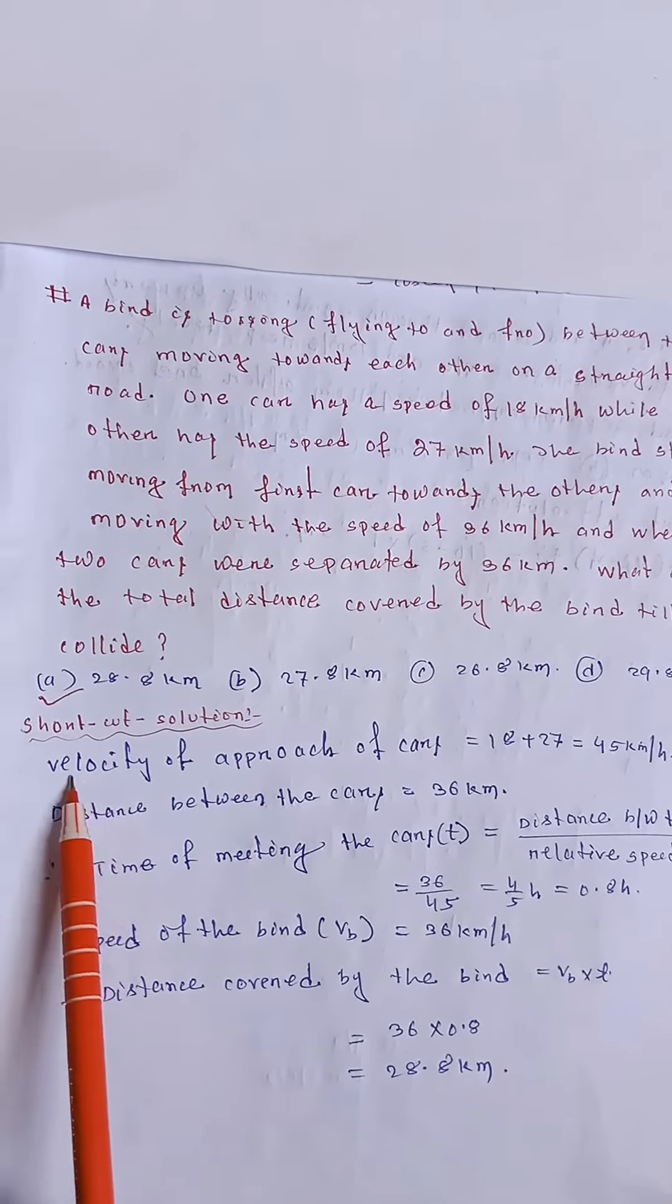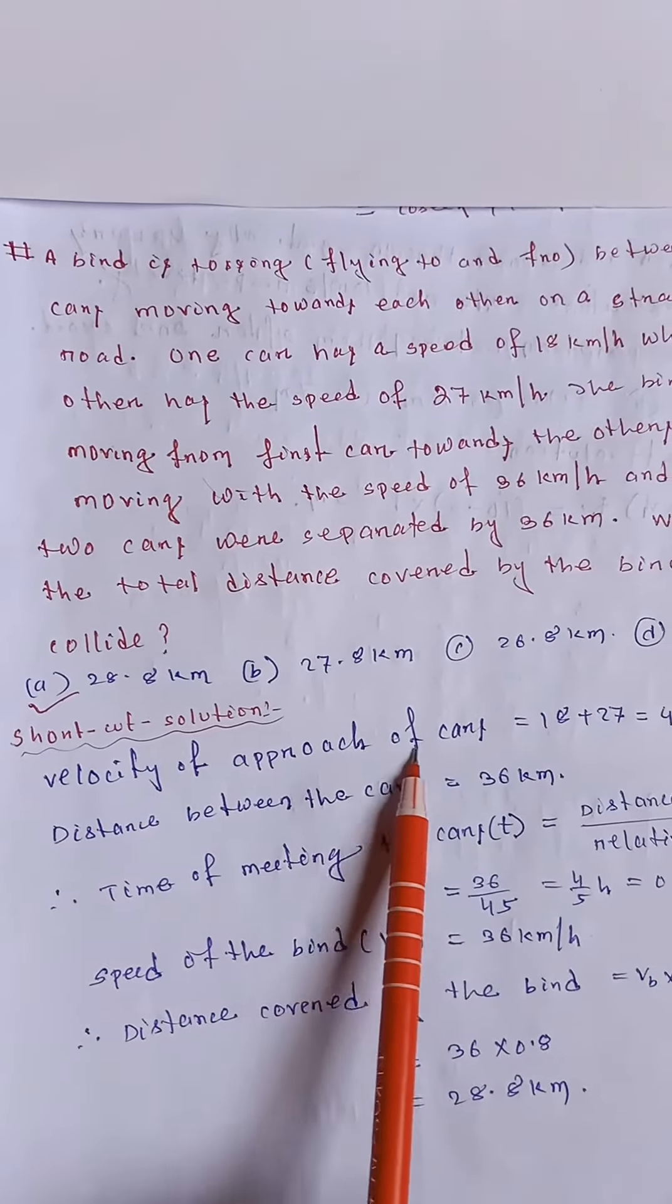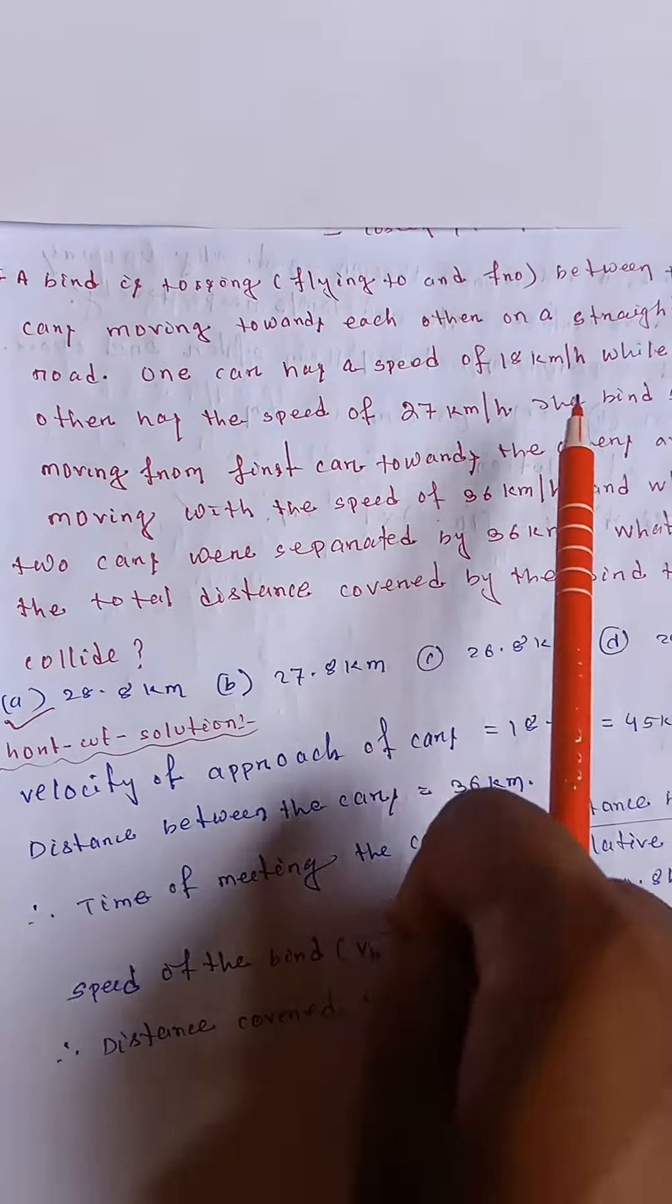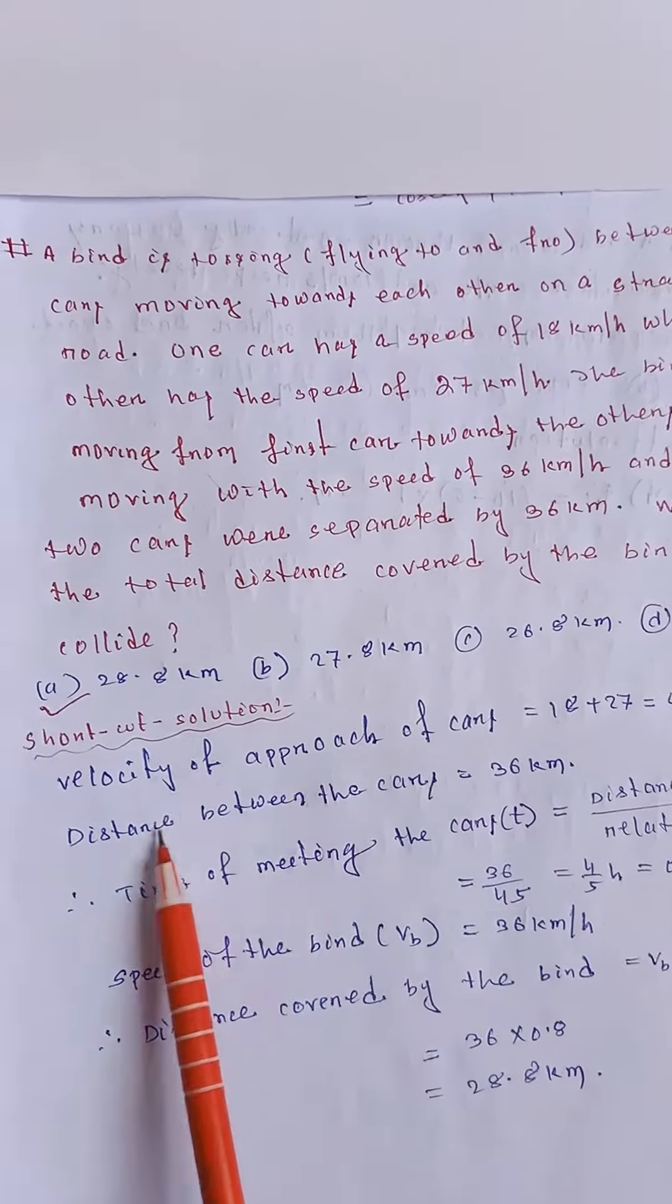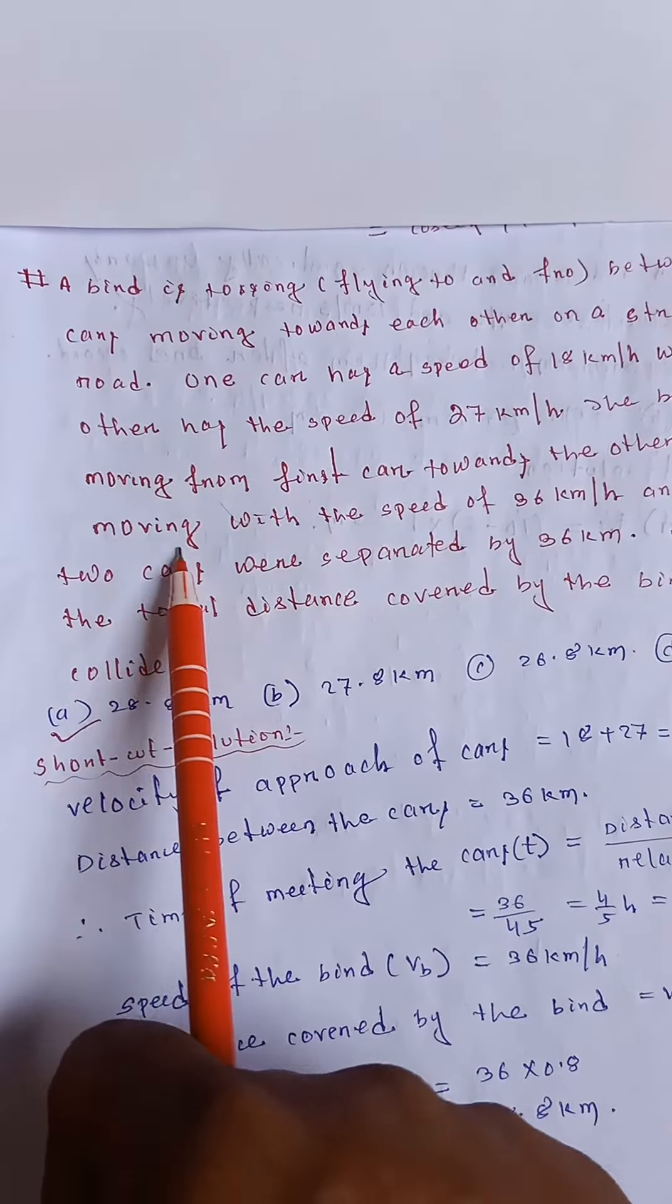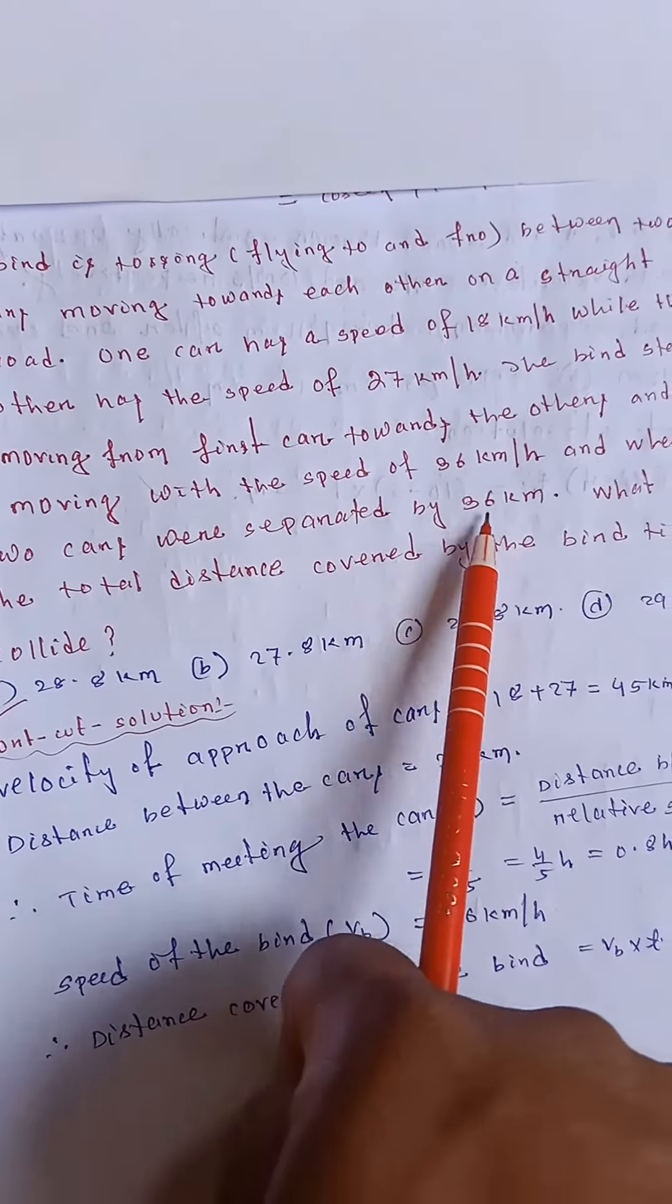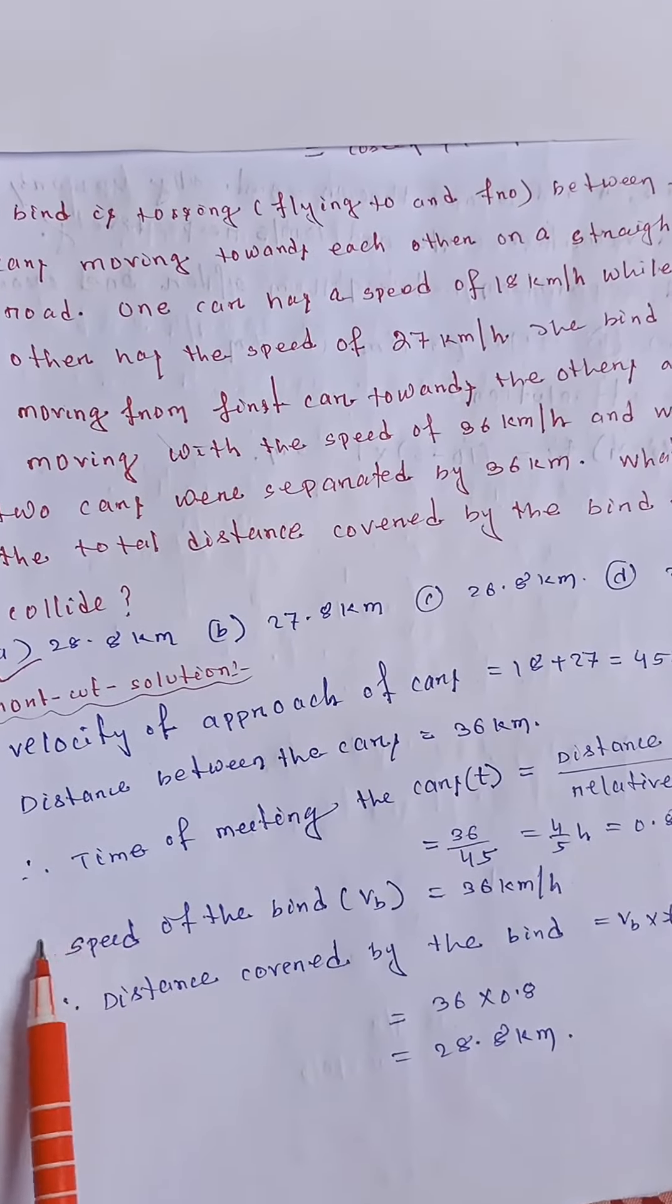Okay. So, velocity of approach of the cars equal to how much? Velocity of approach is 18 km plus 27 km per hour is equal to 45 km per hour. Okay. Distance between the two cars is 36. Here the 36 is given. Distance between the two cars is 36.